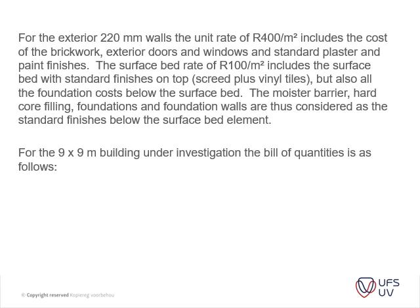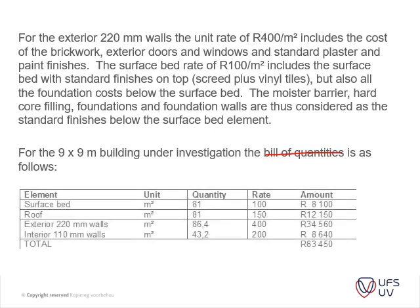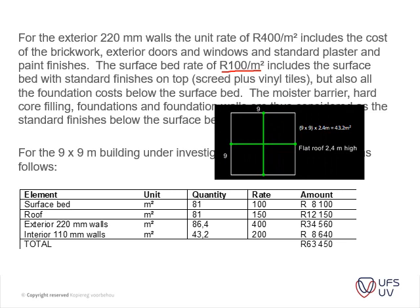For the 9 by 9 metre building, the schedule of quantities is as follows. The surface bed is 9 × 9 = 81m² at a rate of R100/m², giving an amount of R8,100. The roof is also 9 × 9 = 81m² at R150/m², giving R12,150.